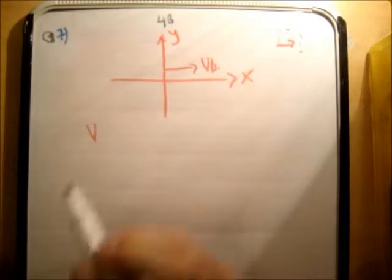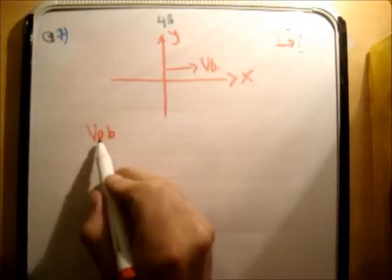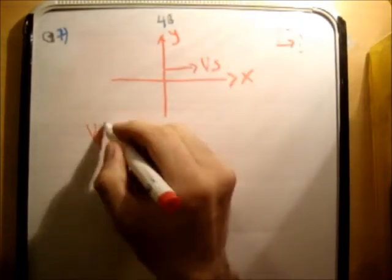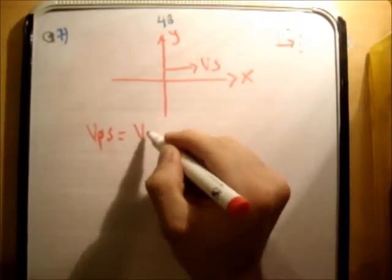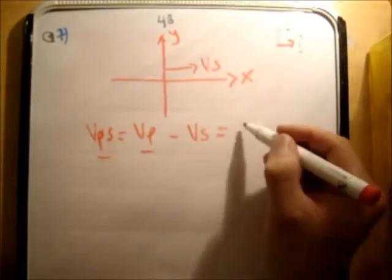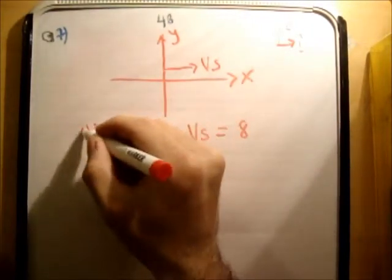So we have the velocity of the passenger relative to the ship. So that's vp, velocity of the passenger relative to the boat. We'll say s for ship. It's equal to vp minus vs and that's equal to 8 meters per second. We don't know its direction, so I'm going to give it a magnitude sign here.